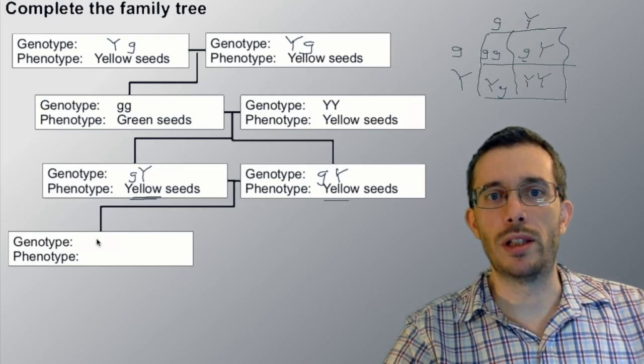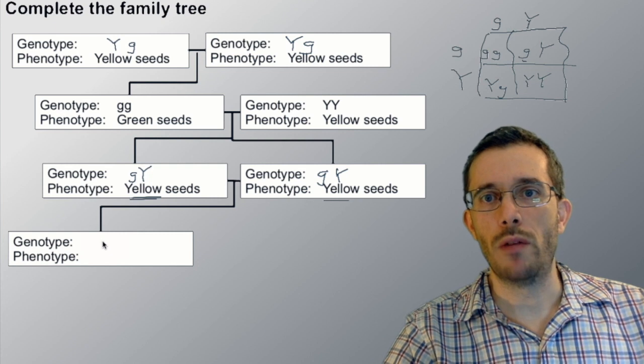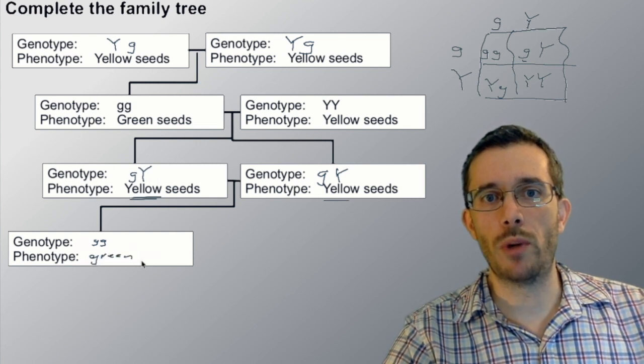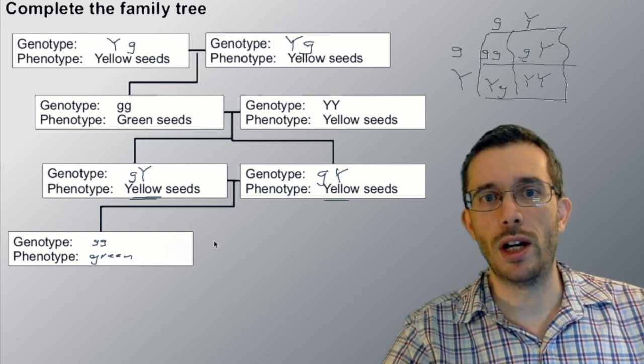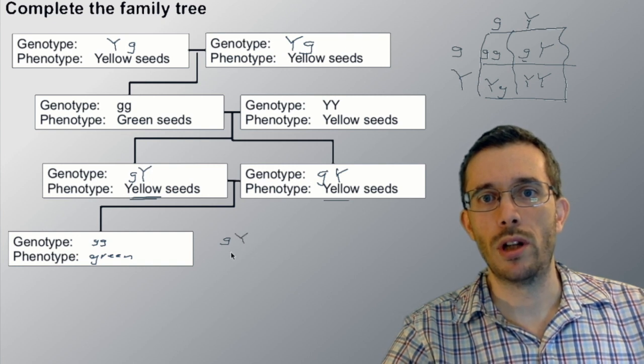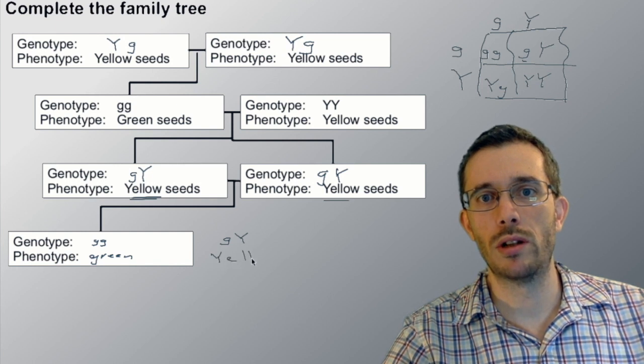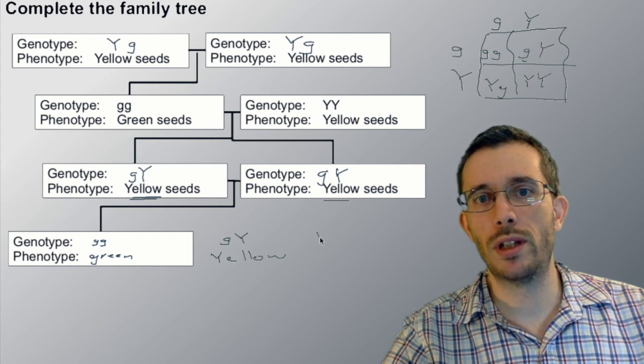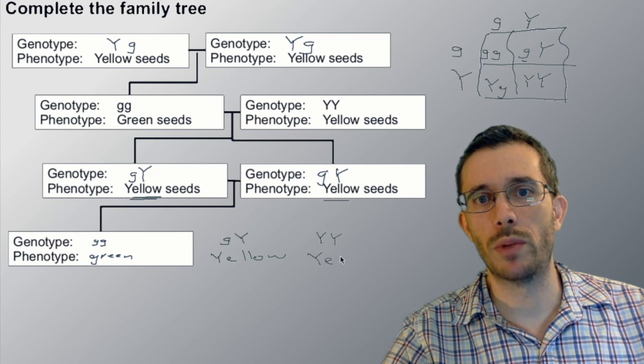So here what are the possibilities? For the genotype we could have in the end green-green. So that child would have green seeds. Then the other possibility would have been that we have green and yellow. In this case the yellow is dominant, so it would appear to be yellow. And then we have the last one yellow-yellow, where of course also it would appear to be yellow.